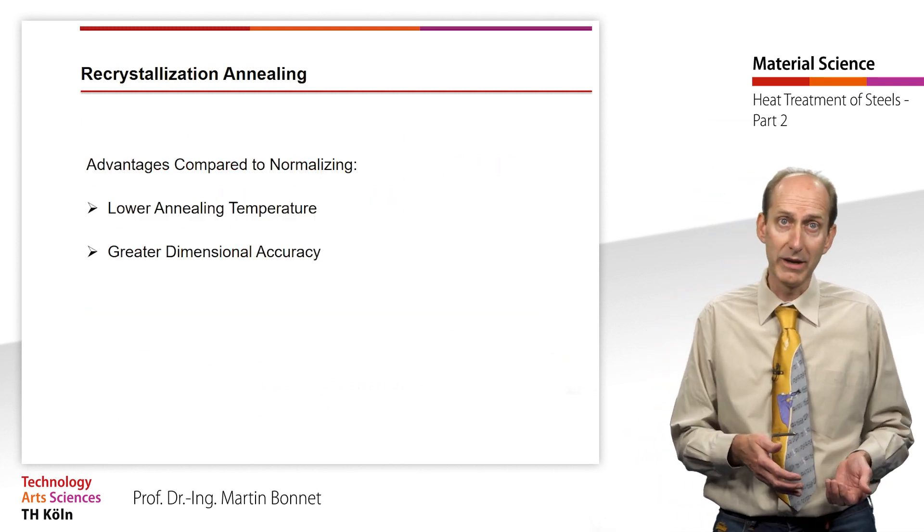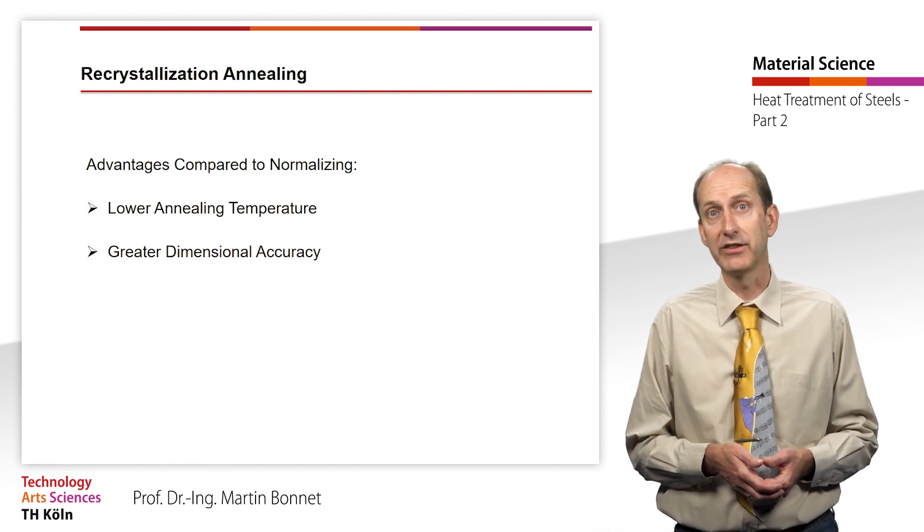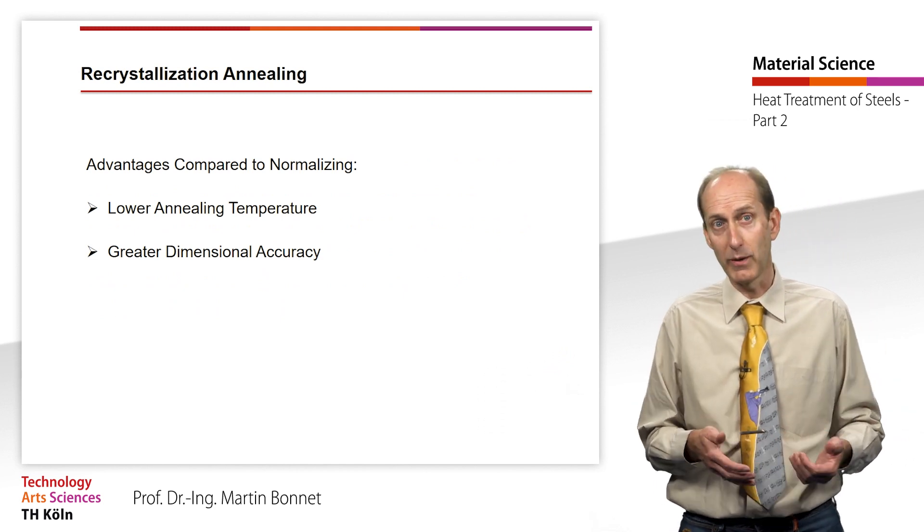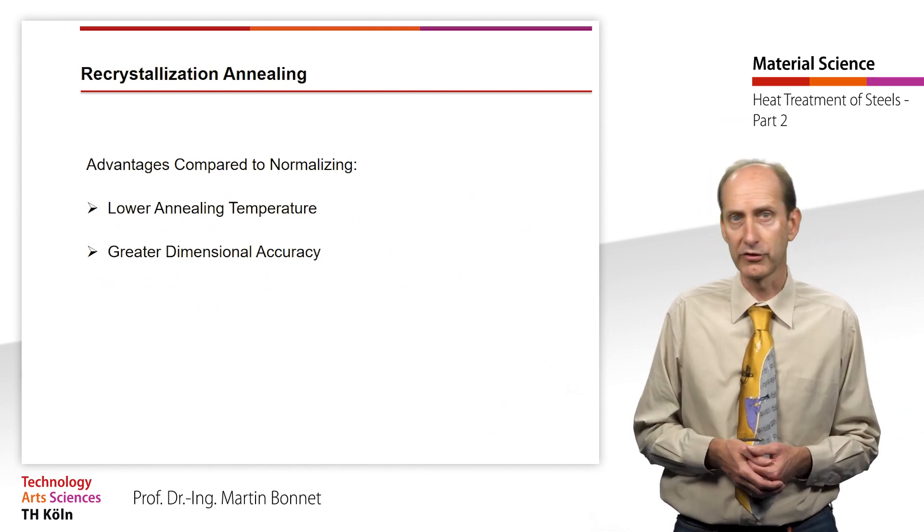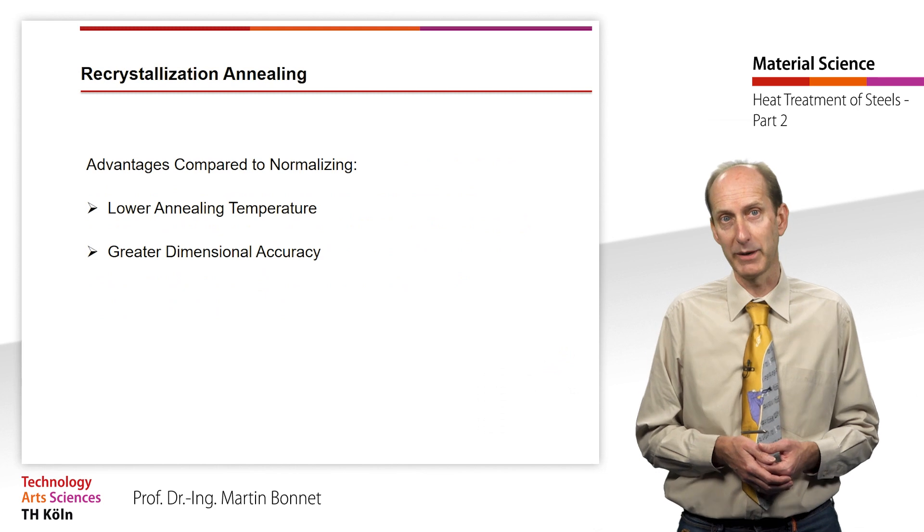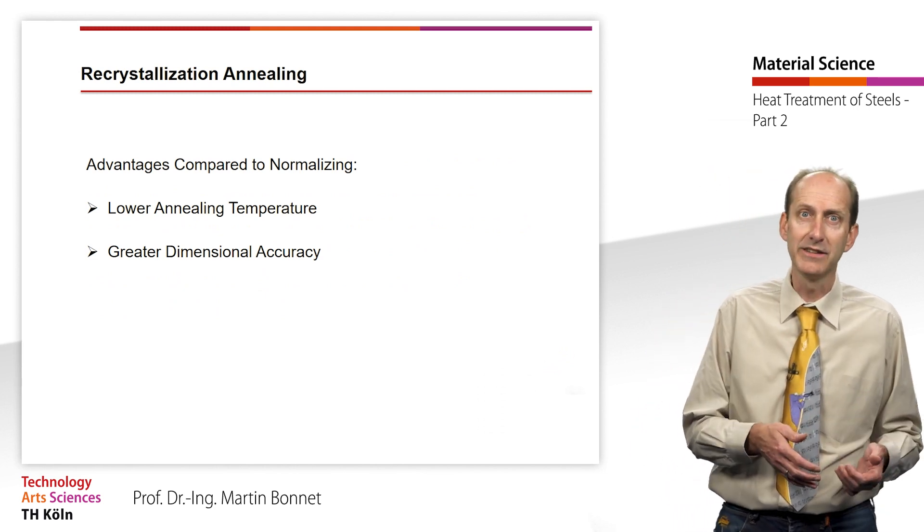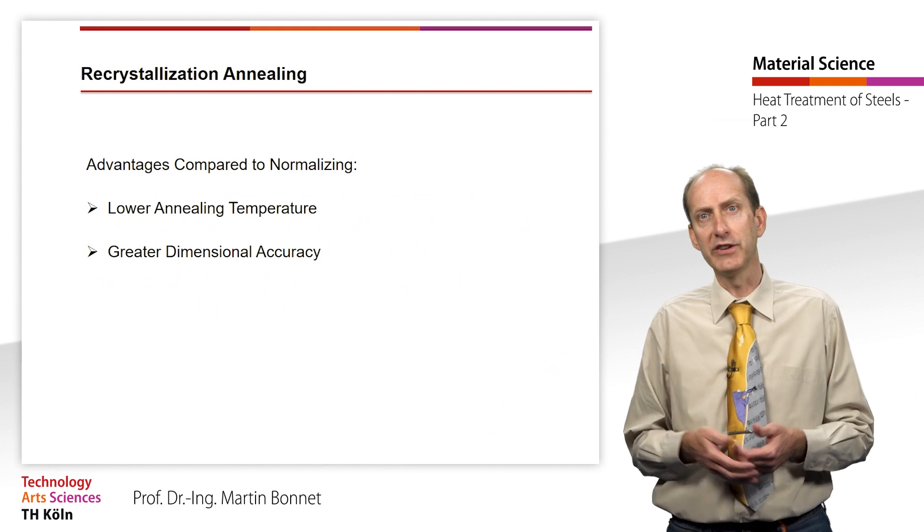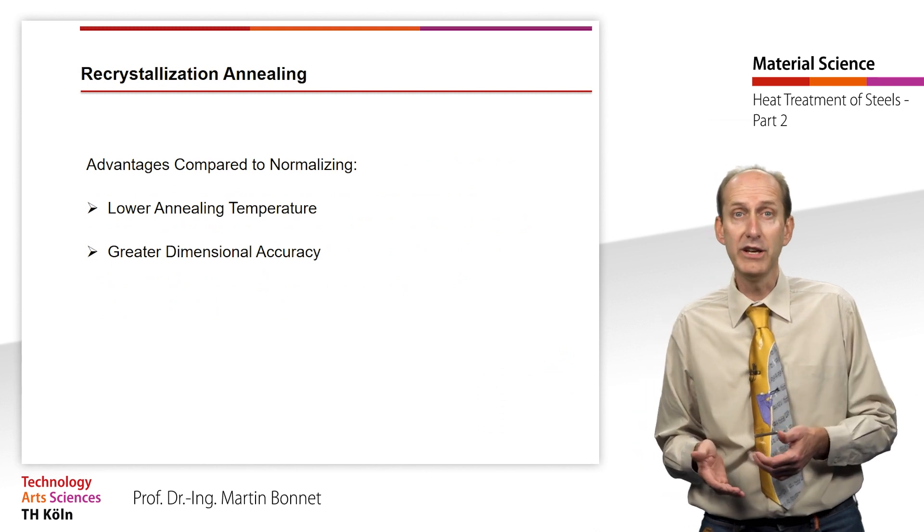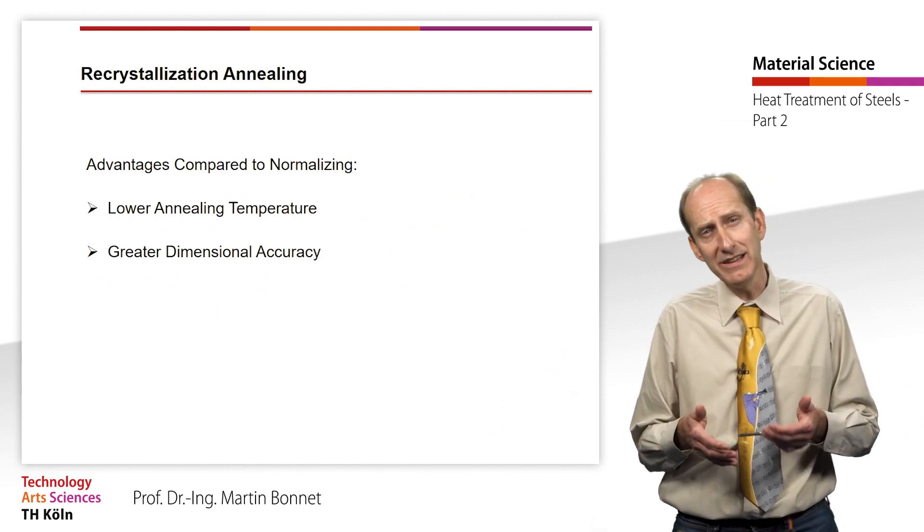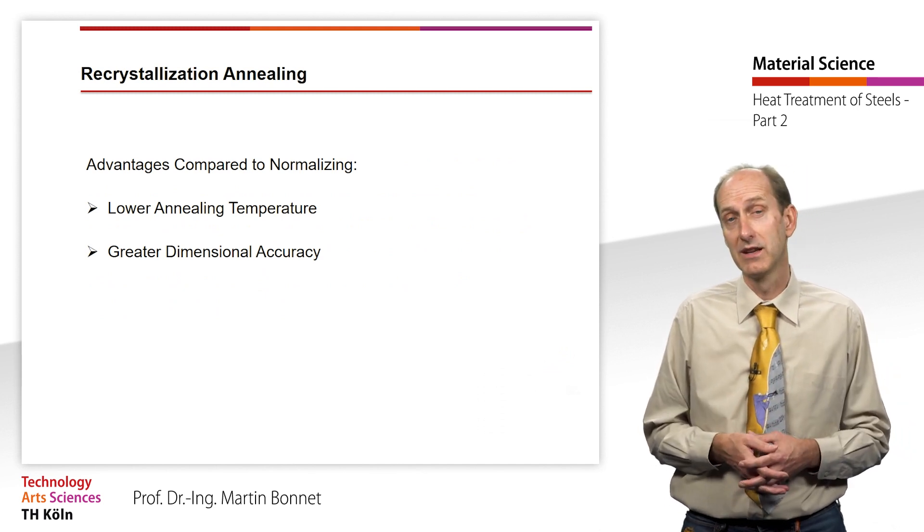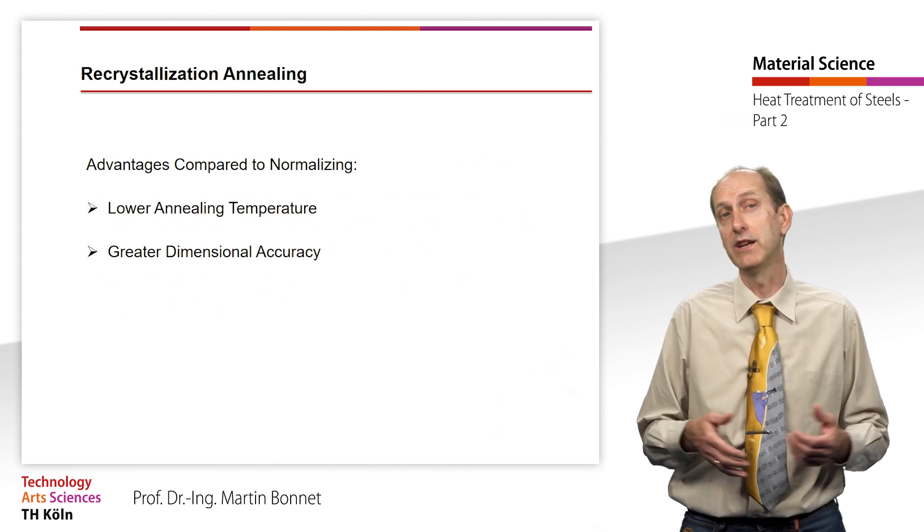Compared to normalizing, however, recrystallization annealing has a number of advantages. On the one hand, much lower annealing temperatures are required to produce a fine-grained microstructure, which has a positive effect on both energy costs and scaling, especially with thin sheets. On the other hand, the dimensional accuracy of recrystallization annealed parts is greater. However, the degree of deformation, annealing time and annealing temperature must be precisely matched during recrystallization. Otherwise, there is a risk of coarse grain formation.